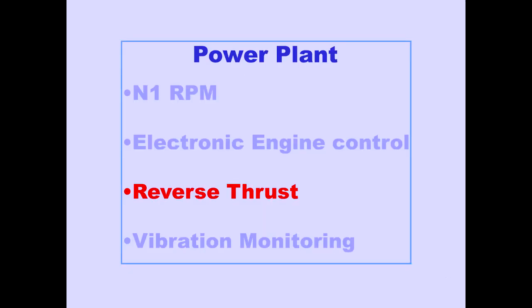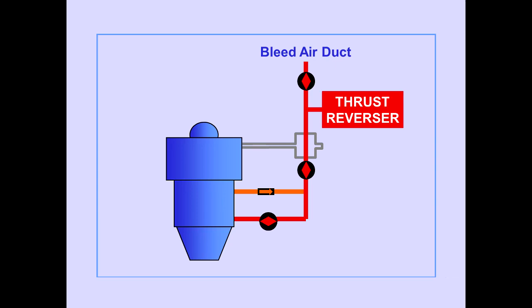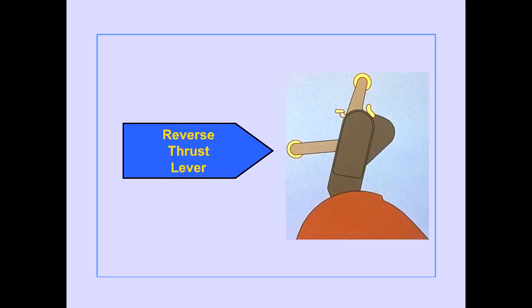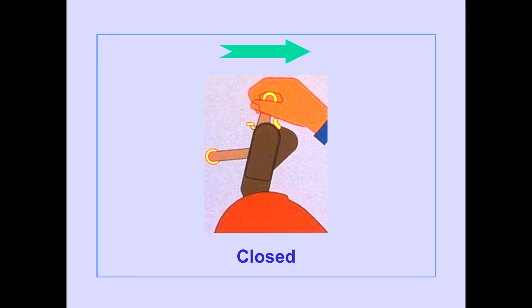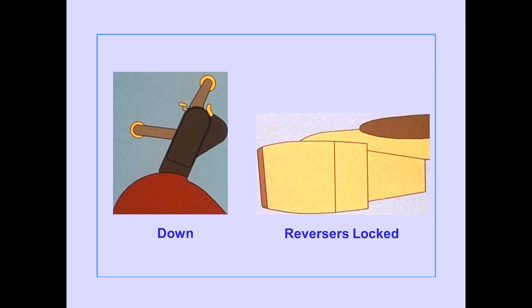Now let's look at reverse thrust. Reverse thrust is accomplished by directing fan air through fixed cascade reversers. Bleed air from each engine powers its respective thrust reverser. To deploy the thrust reversers, the airplane must be on the ground. Reverse thrust levers are located on the forward side of the thrust levers. The forward thrust levers must be moved to the closed position before the reverse thrust levers can be raised. The reverse thrust levers can be moved from the down position to idle detent to full reverse. When the reverse thrust levers are in the down position, the reversers are locked in the stowed position.